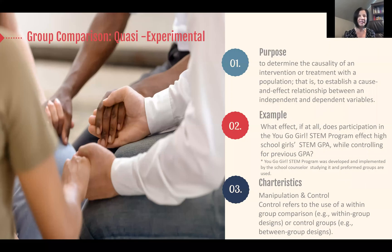Another type of group comparison study and experimental study is a quasi-experimental study. If a scholar desires to determine the causality of an intervention or treatment within a population, or establish a cause and effect relationship between an independent and dependent variable, he, she, or they may want to use a quasi-experimental design.